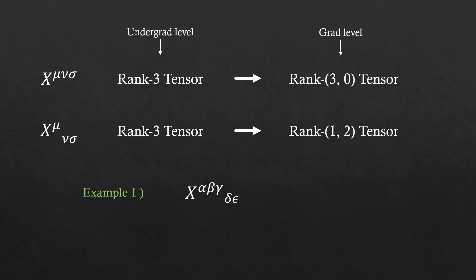For example, example one, what rank should this be? It's a rank three comma two tensor, obviously. Example two, how about this one? No indices on top. So this is just rank zero comma four tensor, all good?